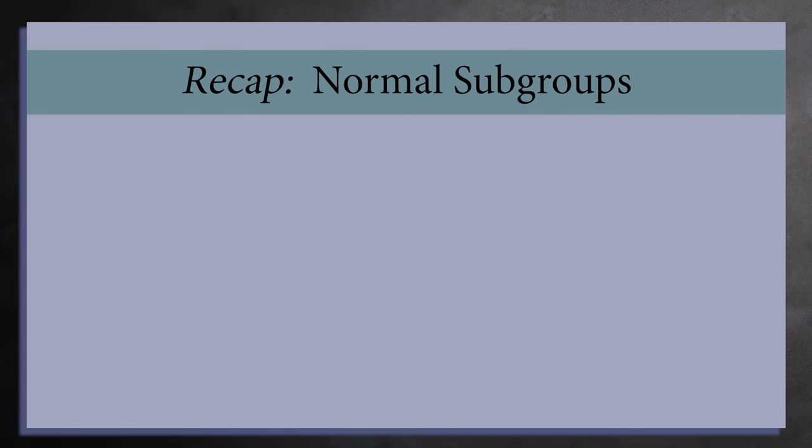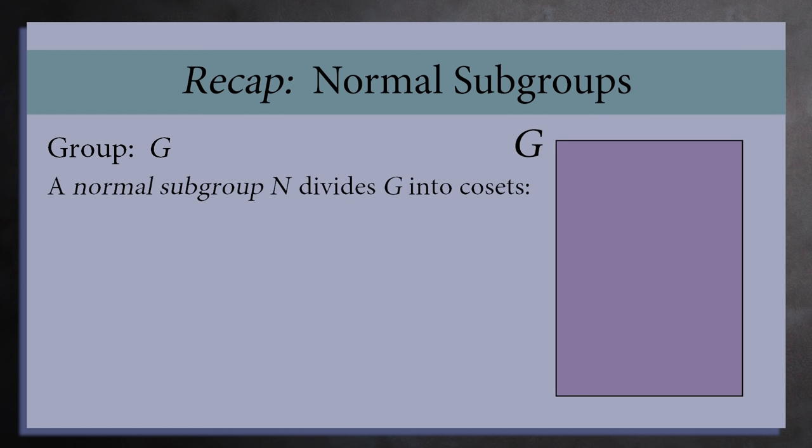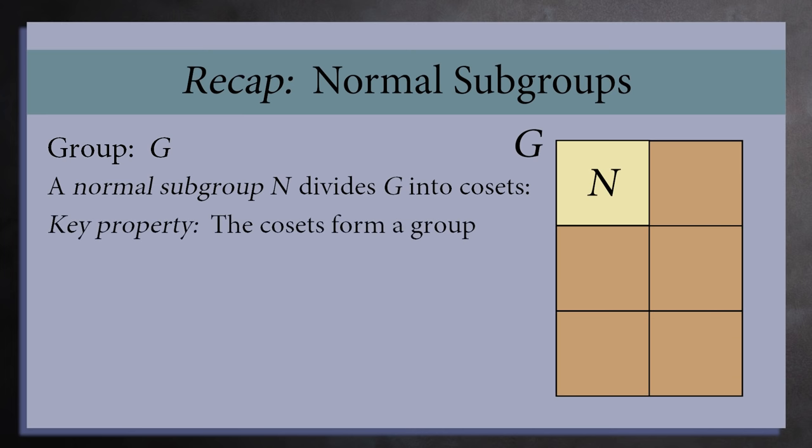To start, let's recall the key properties of normal subgroups. We'll start with a group G. A normal subgroup is a subgroup N of G that divides G into cosets. You can treat the cosets as elements in a new group, which is called a factor group.